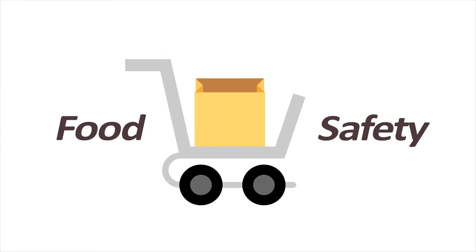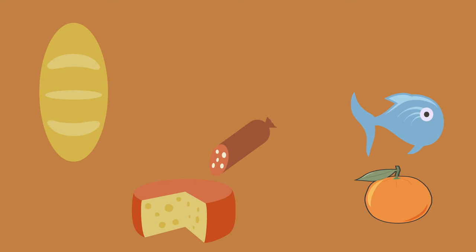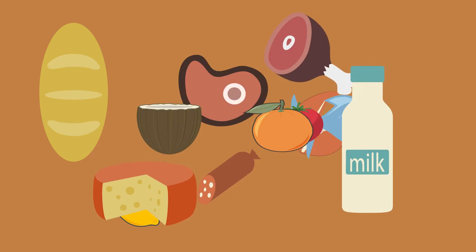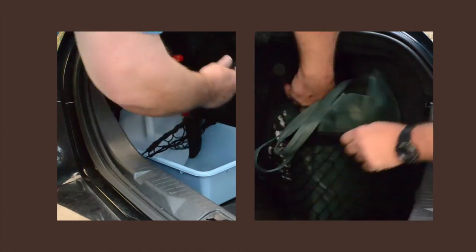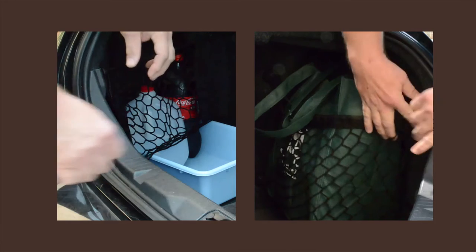Getting your groceries home safe from the commissary is important. Always bag raw meats and seafood separately from other items. Check to make sure items are properly secured in your vehicle and transport liquids in a tub or container in case of spills.